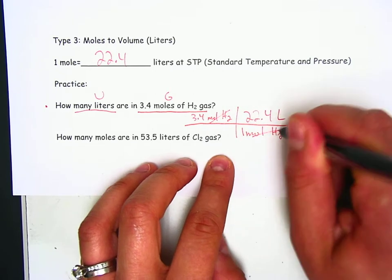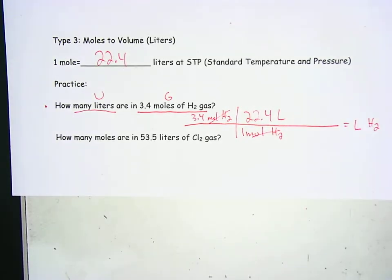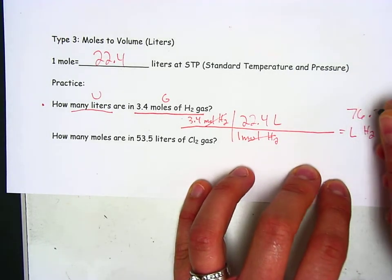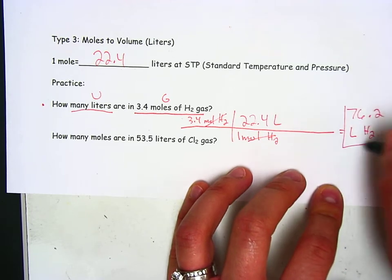So the moles cancel out. 3.4 times 22.4, that would equal 76.2, and that would be your answer.